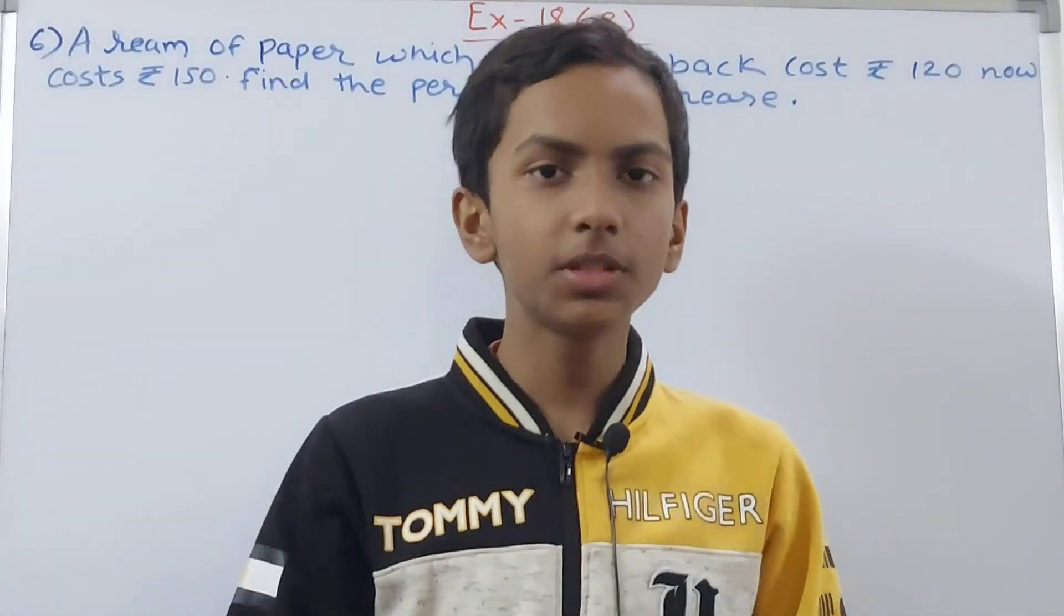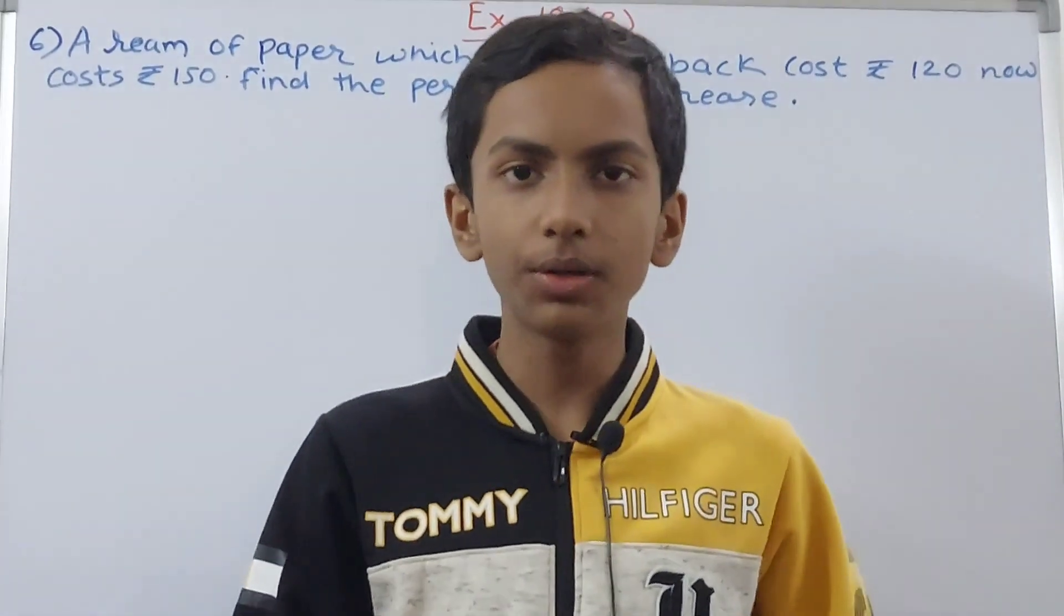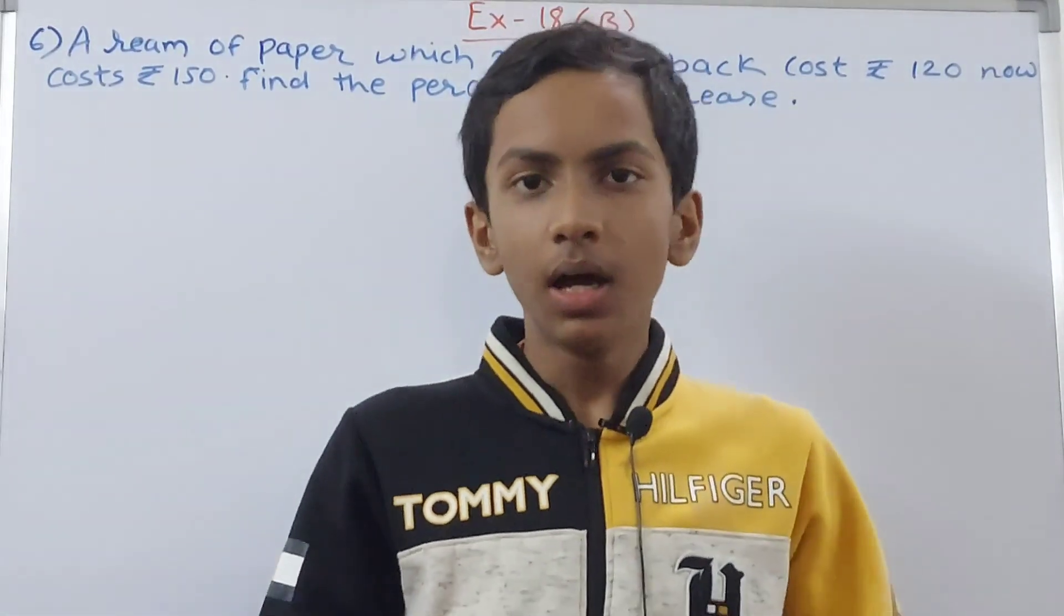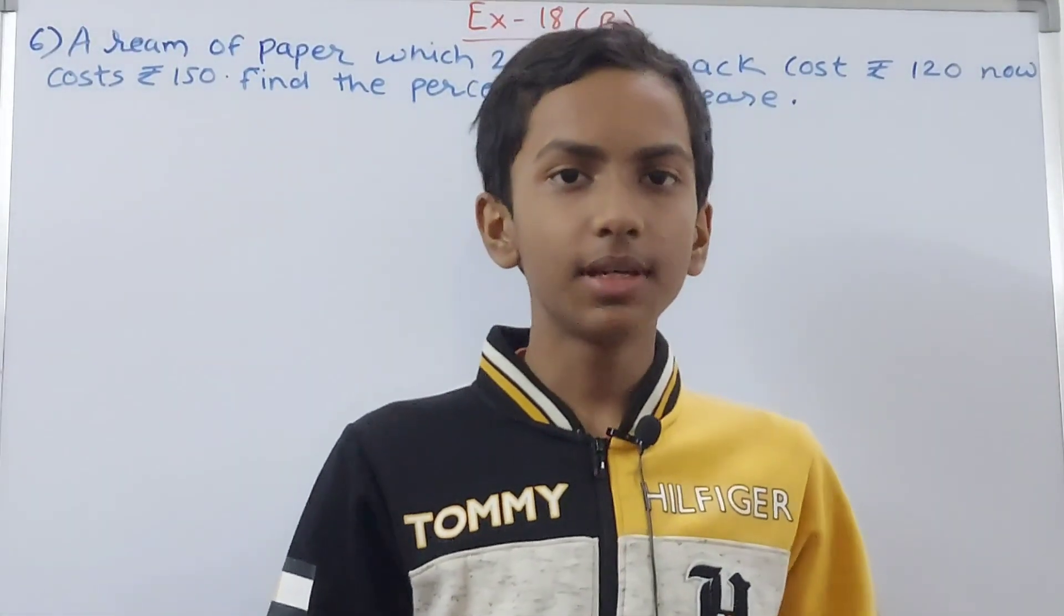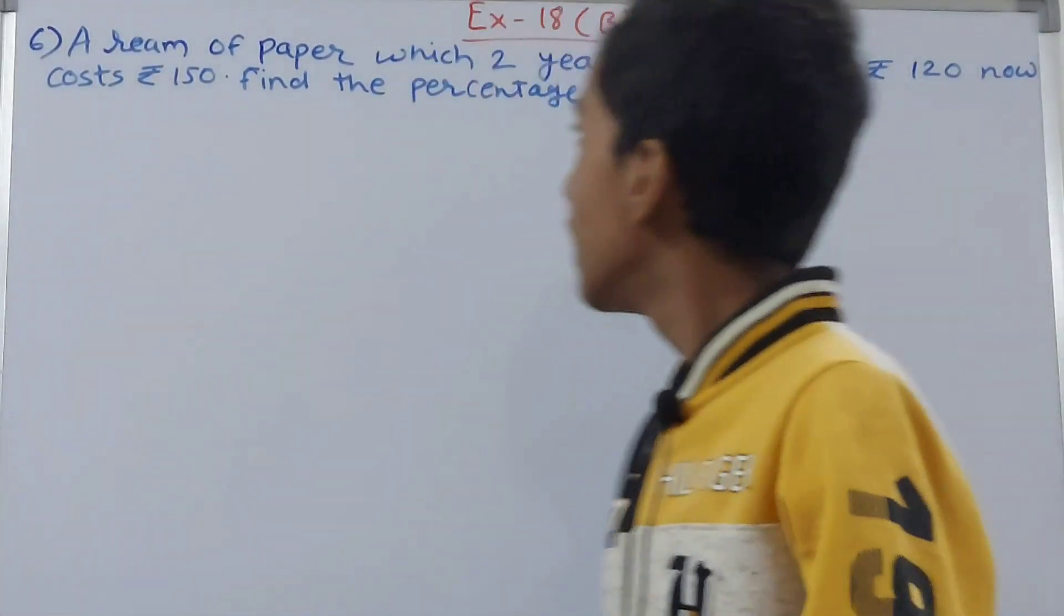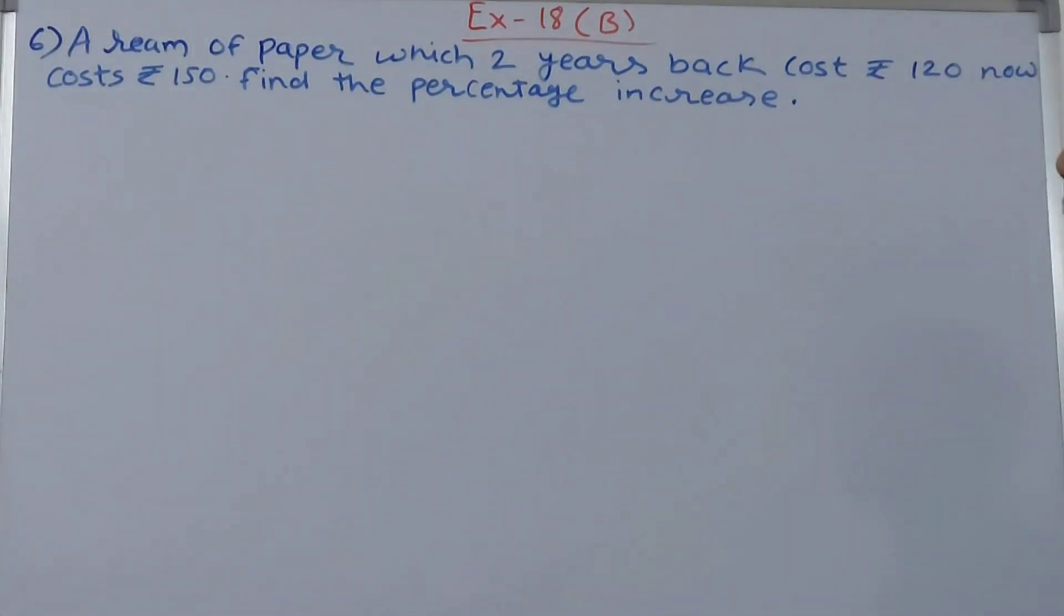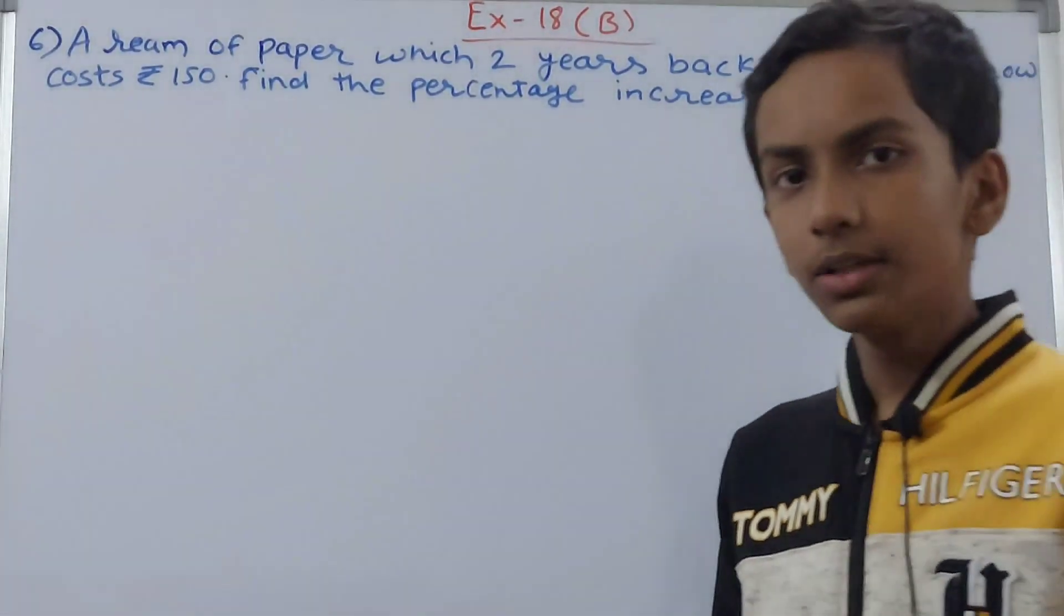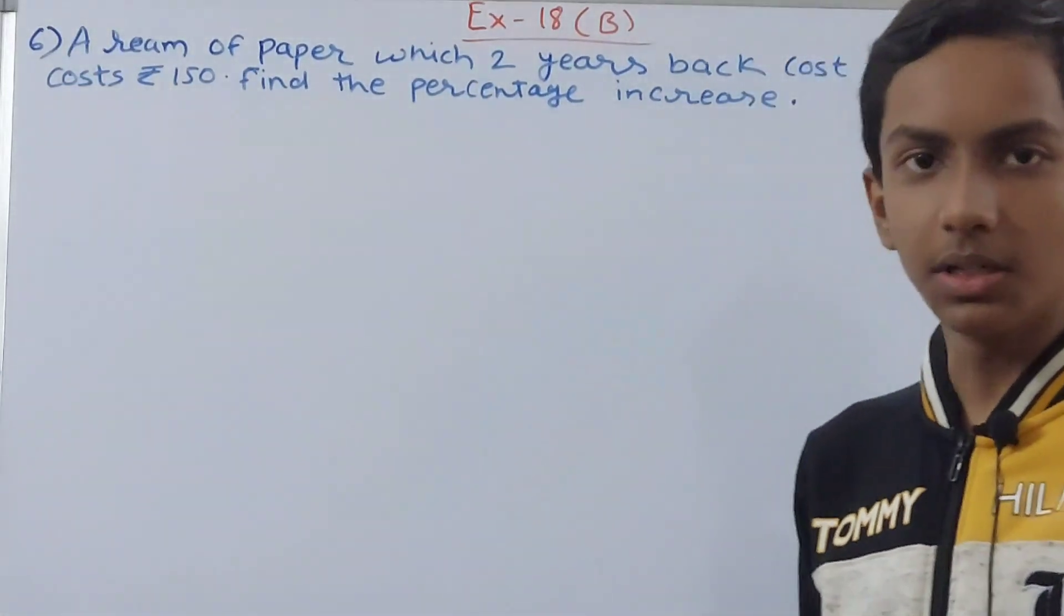Welcome back to my YouTube channel Local Learning. In this video, we are going to solve ICSE Mathematics Class 7, Chapter 18: Percentage and Its Applications, Exercise 18B, Question 6. This question says a ream of paper which two years back cost rupees 120, now costs rupees 150. We have to find the percentage increase.